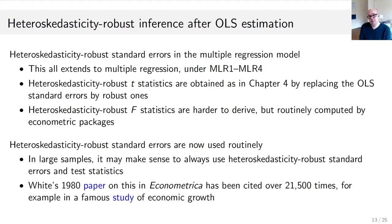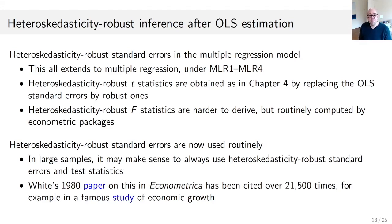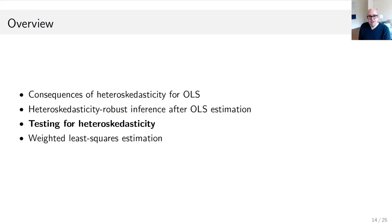In smaller samples things are a little different. The original 1980 paper by White in Econometrica has been cited over 21,000 times. For example, in a famous study of economic growth using a cross-section of countries, it's conceivable that the error term has a bigger variance for bigger countries — a natural application of robust standard errors.